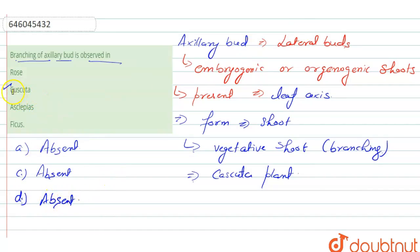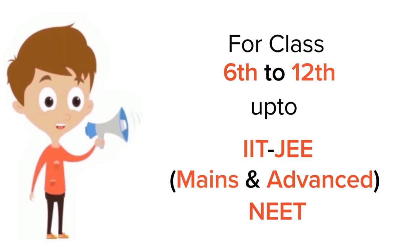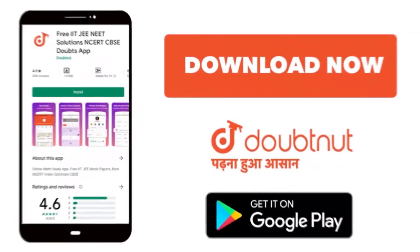So the right answer for our question is option number two only. Thank you. For class 6 to 12, IIT JEE and NEET level, trusted by more than 5 crore students, download Doubtnut app today.